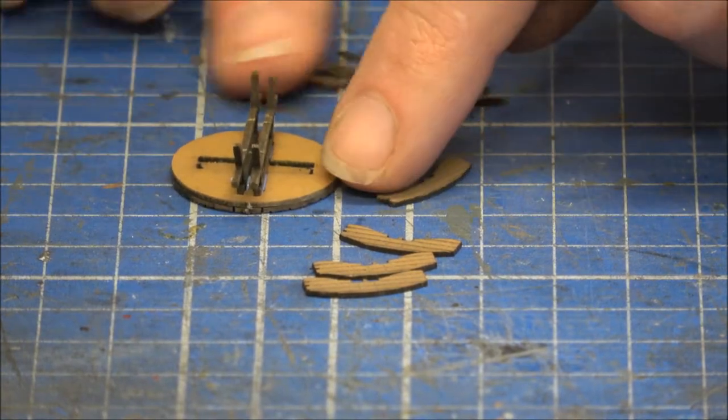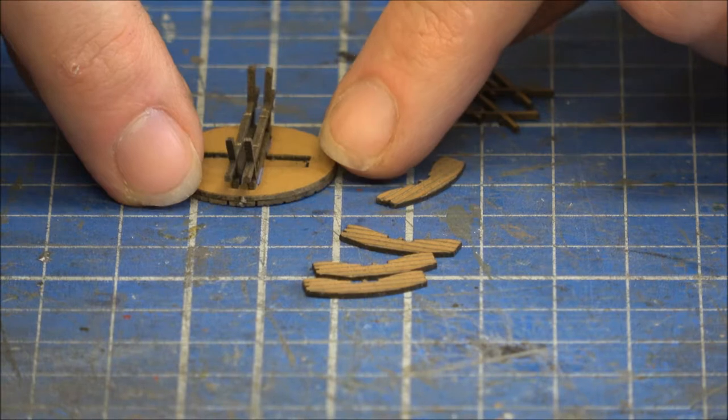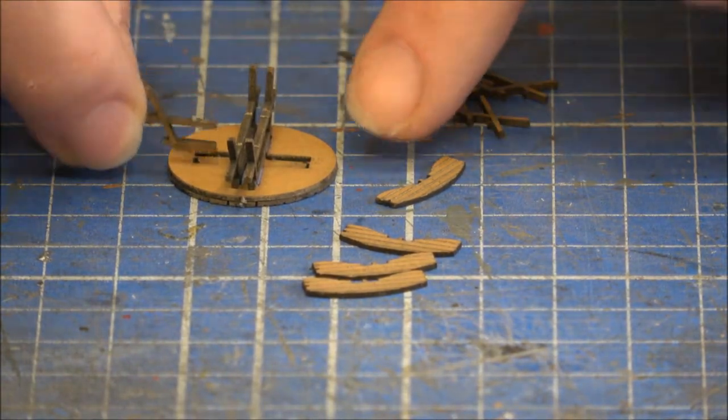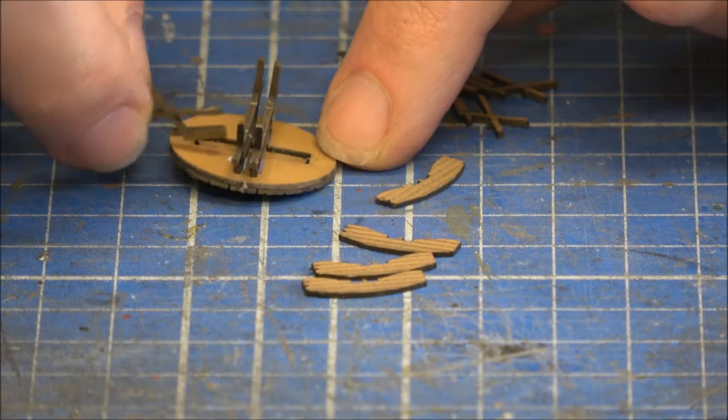So you should end up with two legs in parallel together. I'll just move those bits so you can hopefully see a bit better. And then once you've got those ones on, you can then add in the little side ones which will go in there.